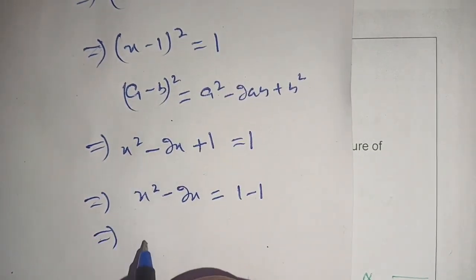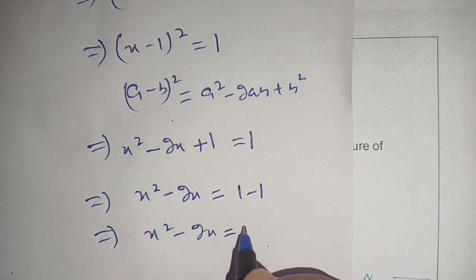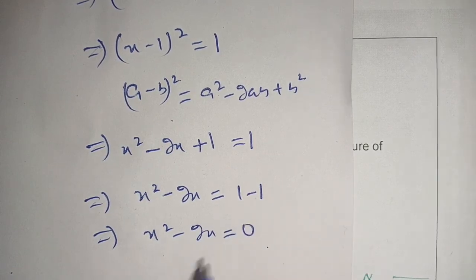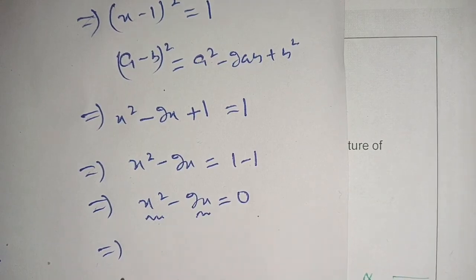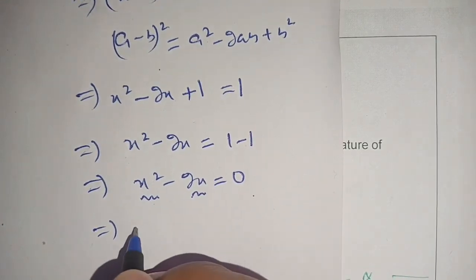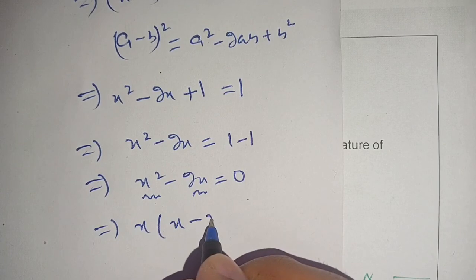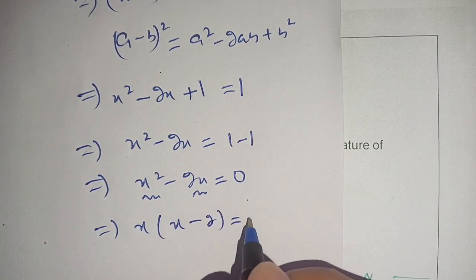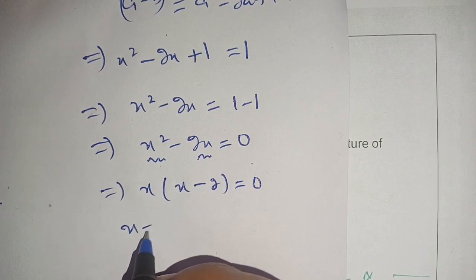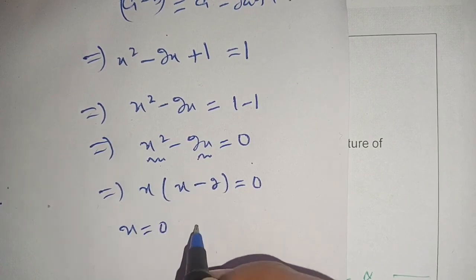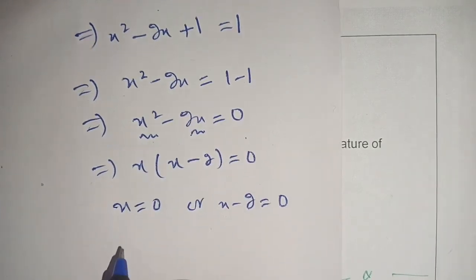Now x squared minus 2x equals 1 minus 1, so our equation becomes x squared minus 2x equals 0. Taking x as a common factor from both terms, we get x(x - 2) = 0. Thus either x equals 0 or x - 2 equals 0.